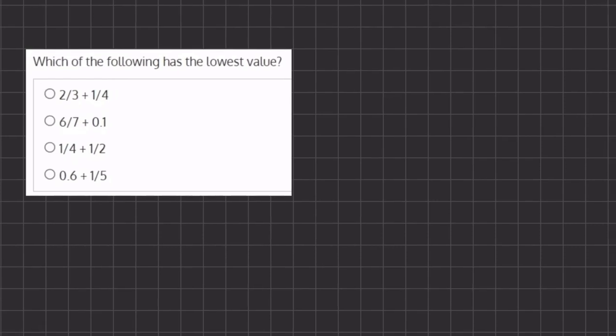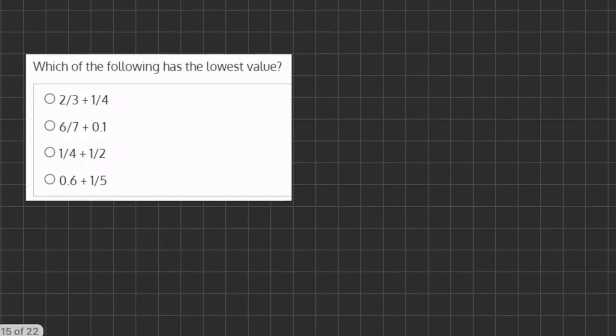In this problem we want to find which of the following expressions has the lowest value. When we take a look at all of our fractions, we can tell that we can easily recognize the decimal version of these fractions. Therefore, we can convert these fractions into decimal form and add them, and it is easier to compare decimal values rather than fraction values.